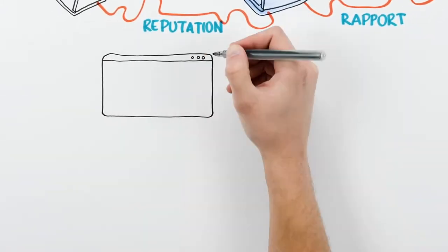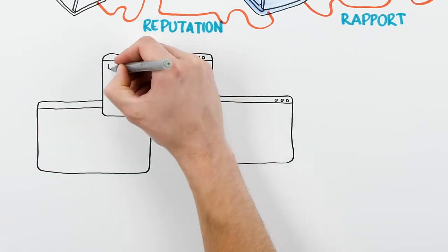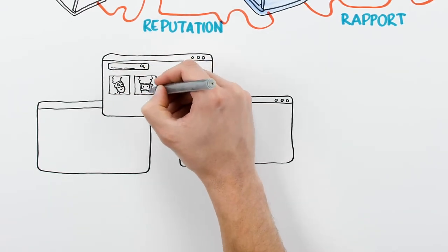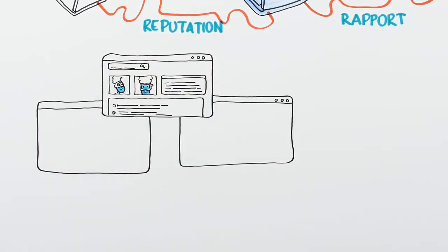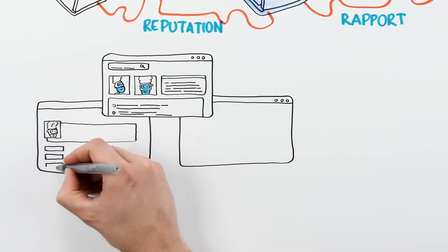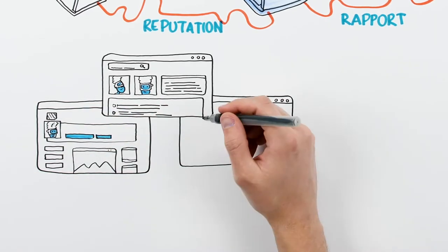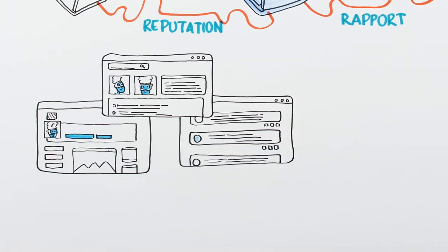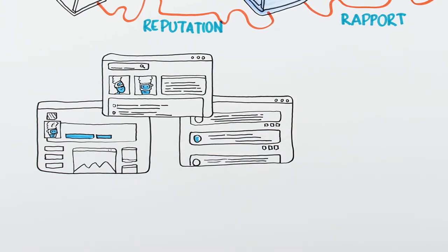Your online reputation is based on everything people can find out by searching online about you. This includes information on websites, as well as your social media accounts and the things you post on forums. It also includes photos you're tagged in and comments that you write.